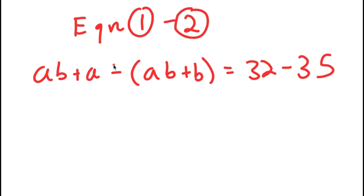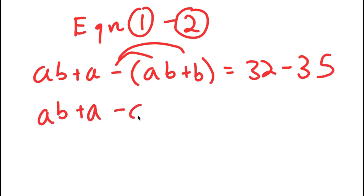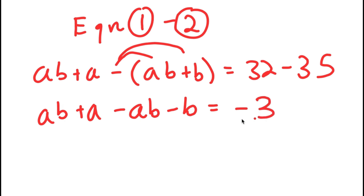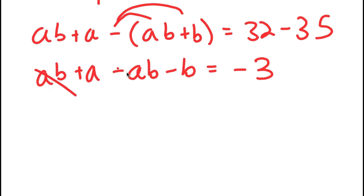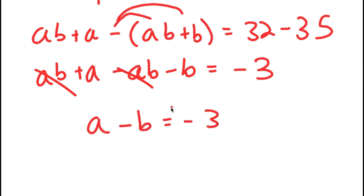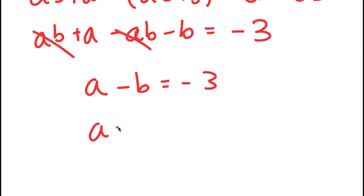So to solve this, what I'm first going to do is distribute the negative sign. So now I get AB plus A minus AB minus B is equal to 32 minus 35, which is equal to negative three. Now I can cancel out AB and negative AB, so I'm left with A minus B is equal to negative three. And this means that A is equal to B minus three.